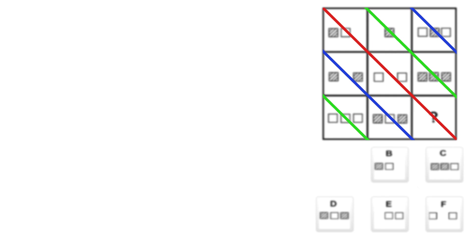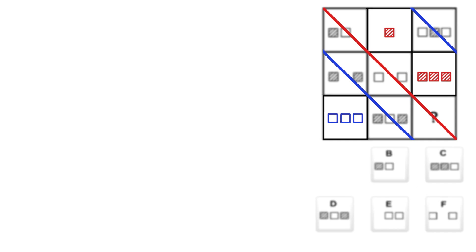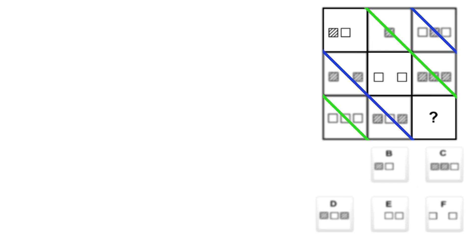Looking at the picture with black squares removed, the only pattern I found was on the diagonals from top left to bottom right. In the blue diagonal, the first picture is the opposite of the third picture, and the known squares of the second picture are identical to the third — so the blue diagonal follows an inverse-same-same pattern. The green diagonal shows the third picture as the opposite of the second, with the first picture matching the second — a same-same-inverse pattern. The red diagonal is missing one picture, so it could follow either pattern.